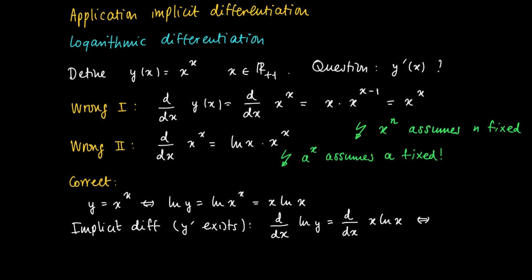And on the left hand side we get, using the chain rule and the result that the derivative of the log is 1 over x, that we get y prime divided by y equals—and now we apply the product rule on the right hand side—1 times ln of x plus x times 1 over x, which is the derivative of ln x. So we get 1 plus ln x.